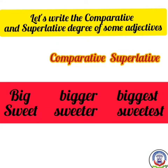Big — for the comparative degree of 'big', we double the final consonant: B-I-G-G-E-R, bigger. Superlative: B-I-G-G-E-S-T, biggest.